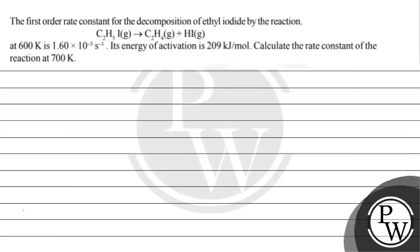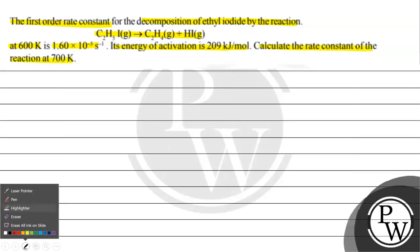Hello, let's read this question. The question says the first order rate constant for the decomposition of ethyl iodide by the reaction is given. At 600 Kelvin it is 1.60 into 10 to the power minus 5 per second. Its energy of activation is 209 kilojoule per mole. Calculate the rate constant of the reaction at 700 Kelvin.